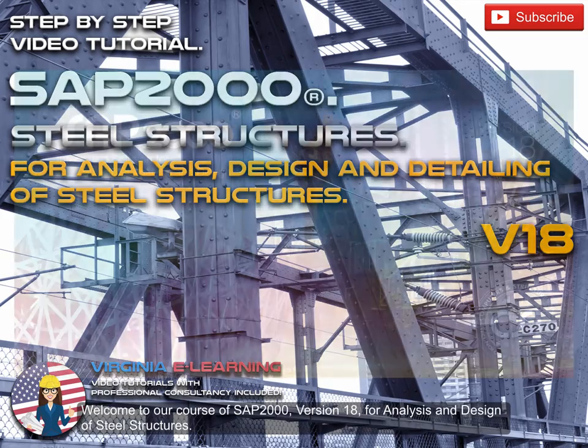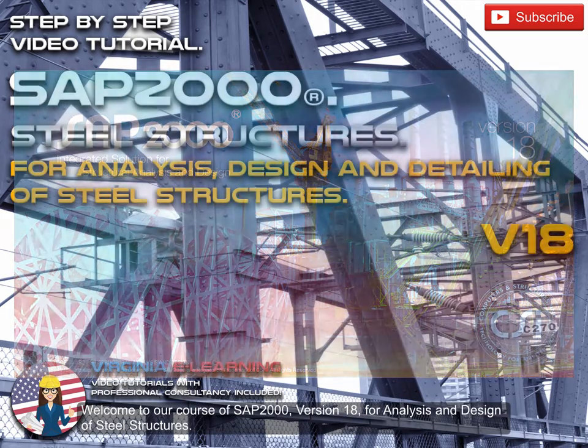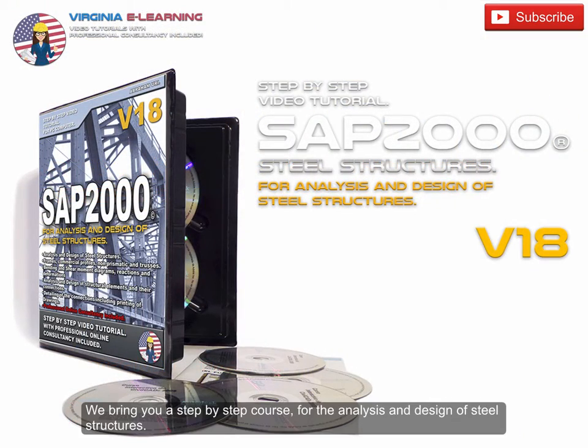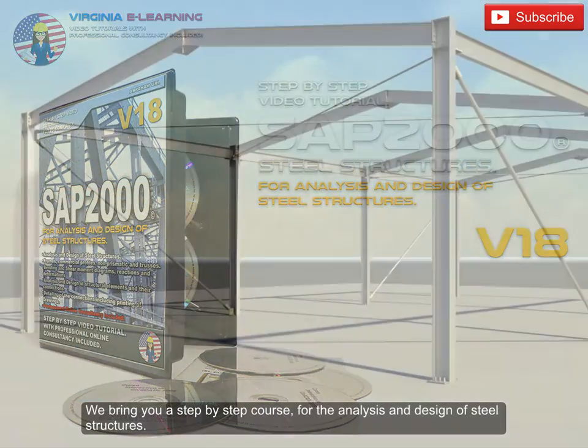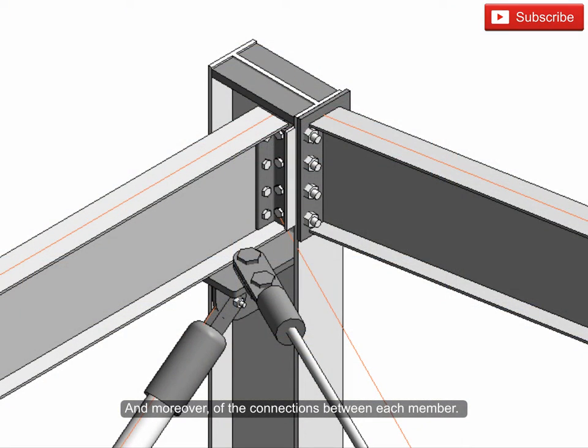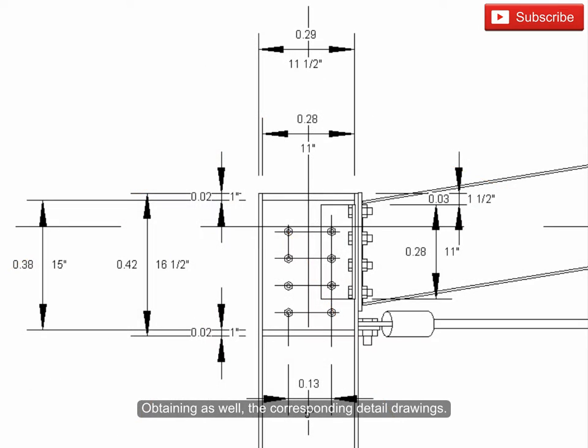Welcome to our course of SAP 2000, version 18, for analysis and design of steel structures. We bring you a step-by-step course for the analysis and design of steel structures, and moreover, the connections between each member, obtaining as well the corresponding detail drawings.